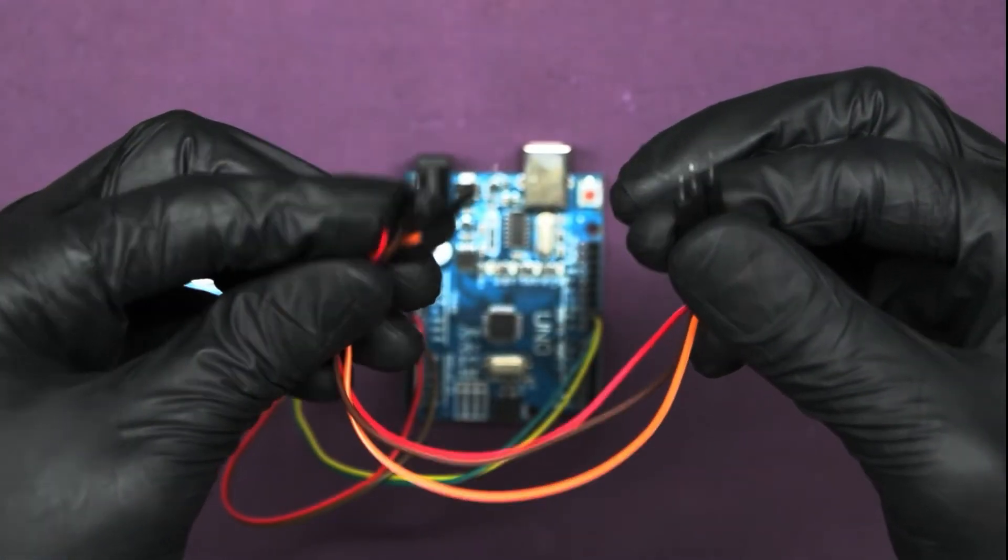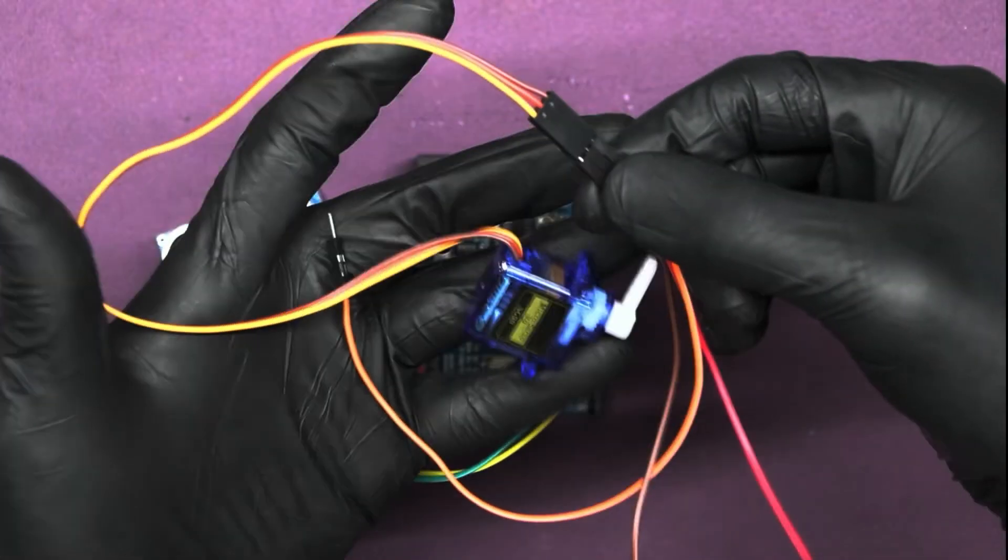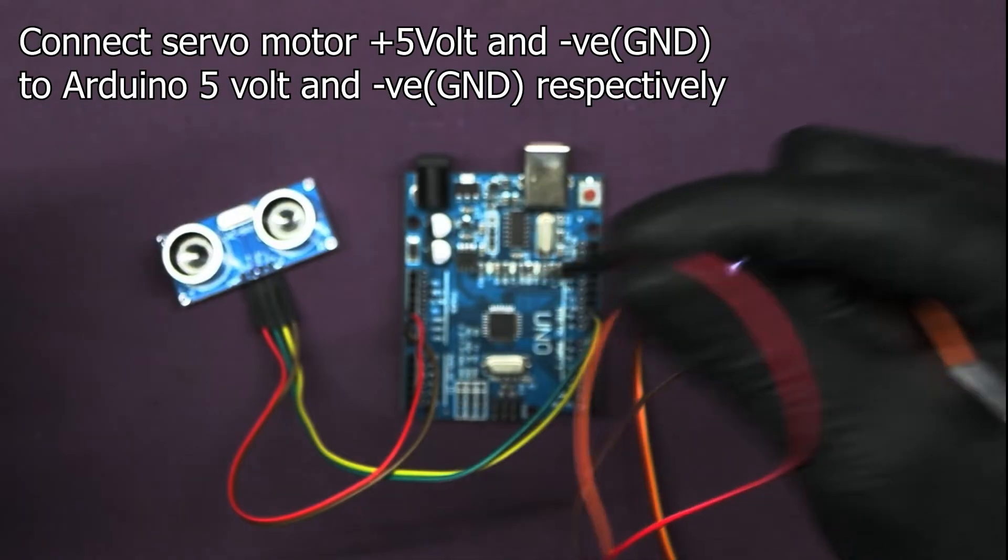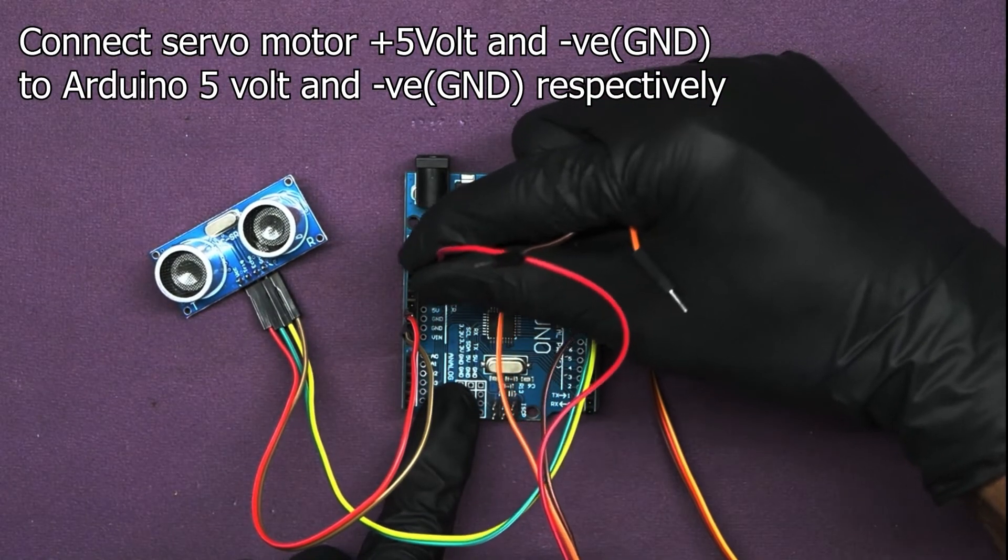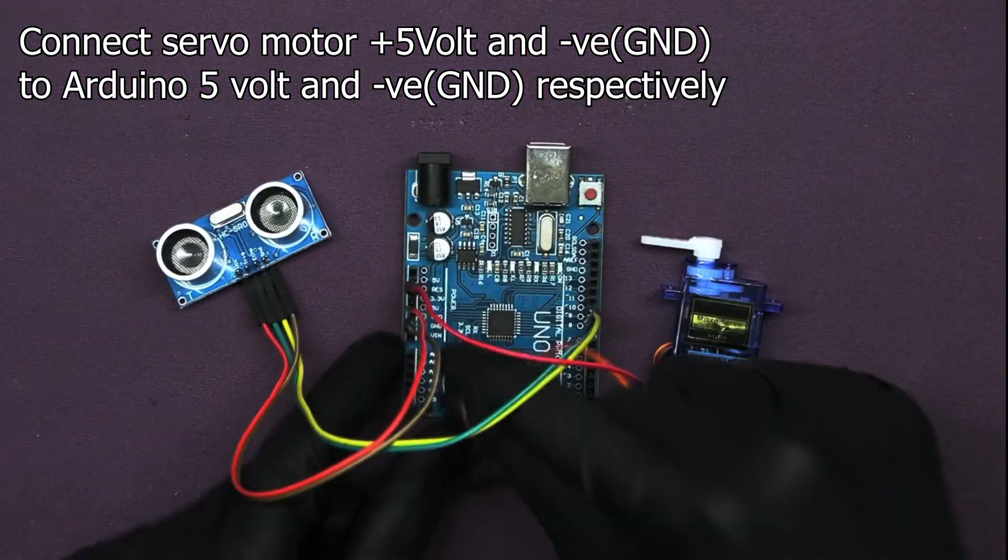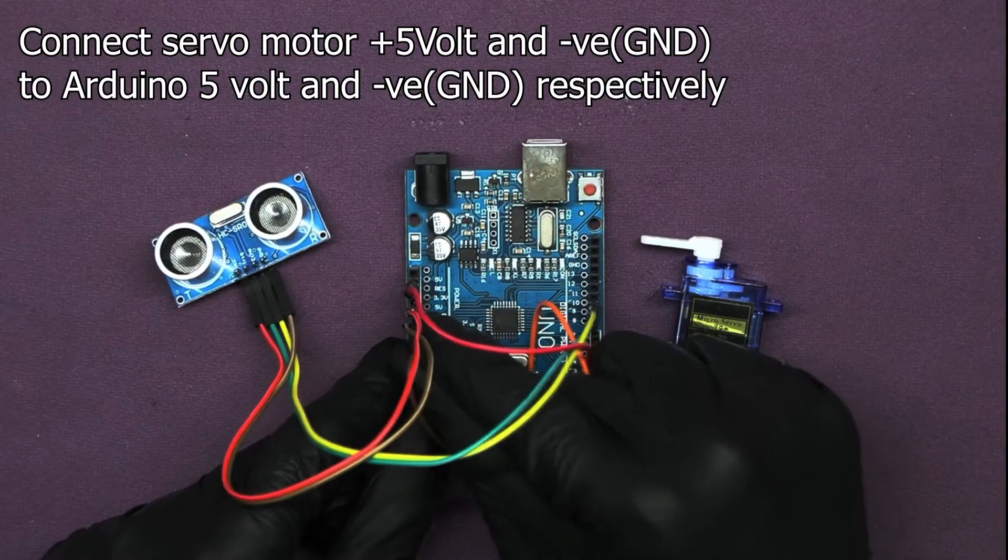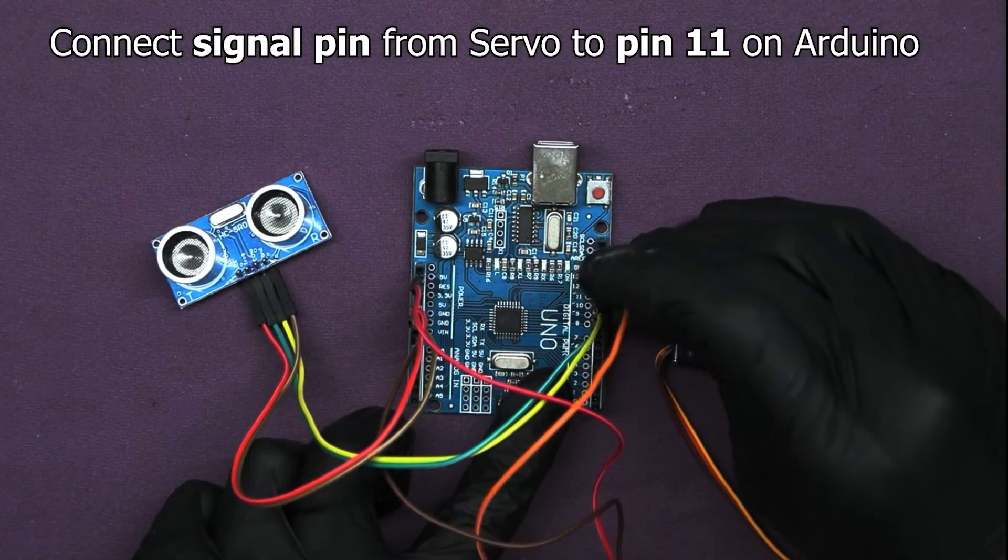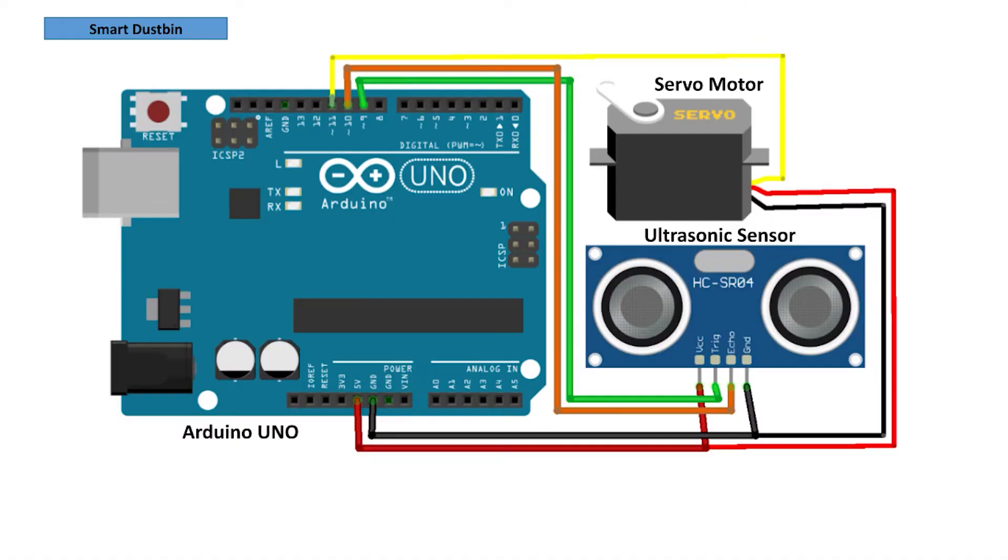Then connect male to male jumper wires to the servo motor. As for the servo motor, we'll connect its VCC and GND pins to the 5 volts and GND pins on the Arduino respectively, and the signal pin to digital pin 11. Verify your connections according to this circuit diagram.